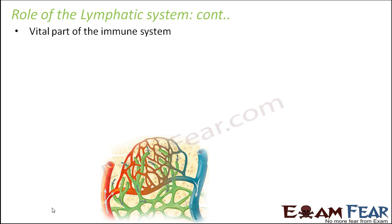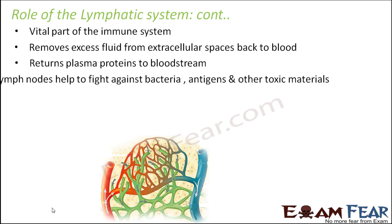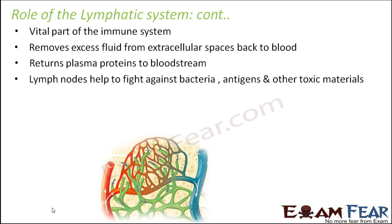It is a vital part of the immune system. The antibodies manufactured in the lymph nodes assist the body to build up effective immunity to infectious diseases, so the lymph nodes play an important role in the immune system. They remove excess fluid from the extracellular spaces back to the blood, since lymph is essentially blood plasma that comes from blood and is sent back to blood. They also return plasma proteins to the bloodstream, and lymph nodes help fight against bacteria, antigens, and other toxic materials.